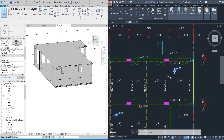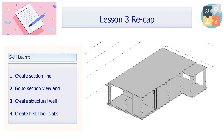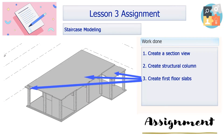Remember to save the file. Now let's recap what we have done in this lesson. Firstly, we created two section lines according to the reference drawing. Secondly, we went to the section view with these two section lines. Thirdly, we created the structural wall. Lastly, we created the first floor slab. For the assignment, you need to complete all tasks we've been through, including the section lines, walls, and floor slab. Try your best to get hands-on with these exercises and get more familiar with Revit before going on to the next lesson. Thank you.